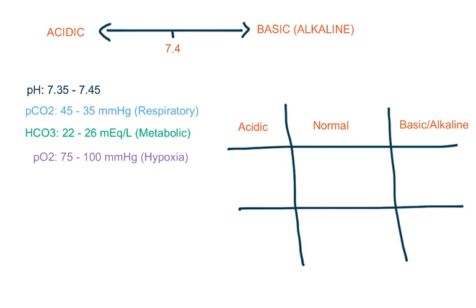The levels of carbon dioxide and bicarb determine whether it is respiratory or metabolic acidosis or alkalosis respectively. The partial pressure of oxygen is normally 75 to 100, but it only determines whether the patient is hypoxic or not. So the interpretation basically depends on these three parameters.